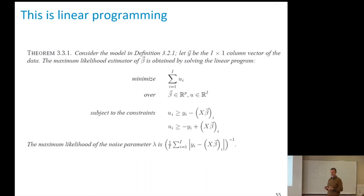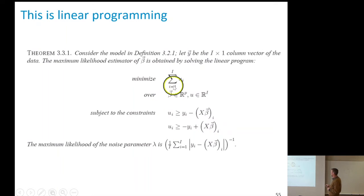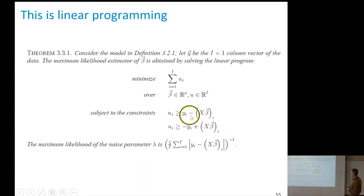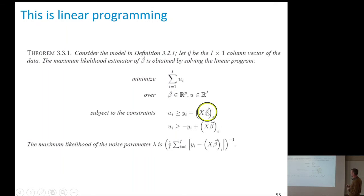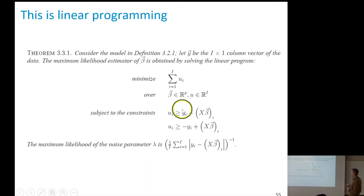There is a trick: if you want to minimize the sum of absolute values of the errors — where the error is yi minus x-beta, the ith coordinate — note that the absolute value of a number can be written as the maximum of x and minus x.